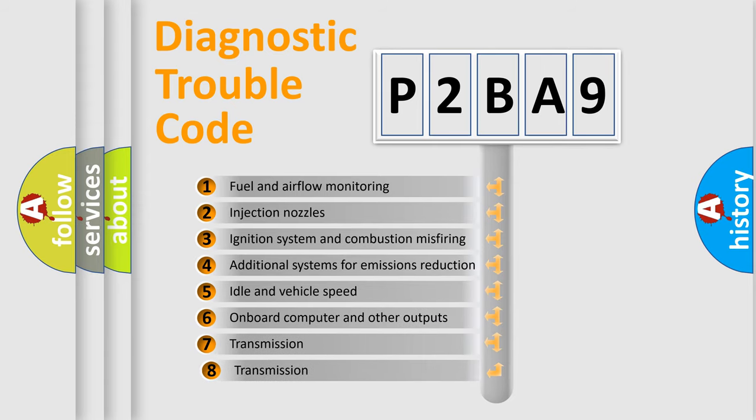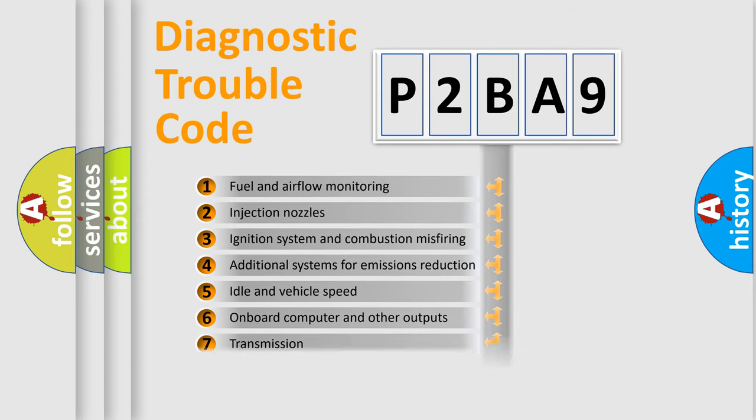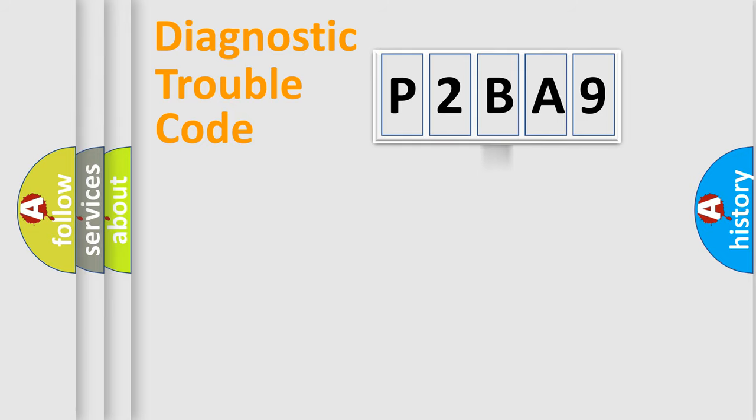The third character specifies a subset of errors. The distribution shown is valid only for the standardized DTC code.